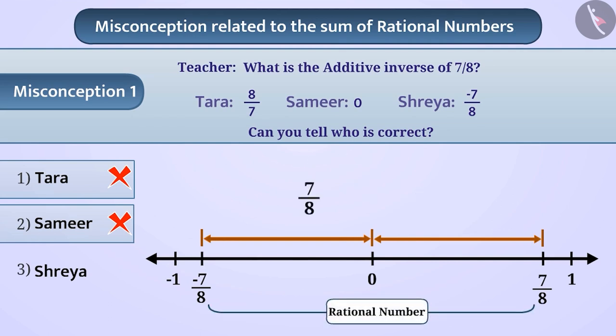Since we get 0 when we add minus 7 by 8 to 7 by 8, the additive inverse of 7 by 8 is minus 7 by 8. Hence, option 3 is the correct answer.